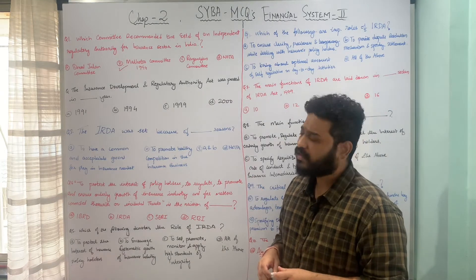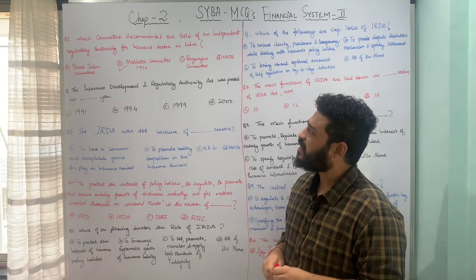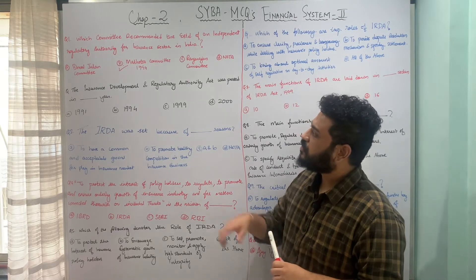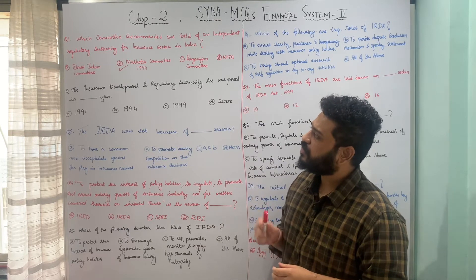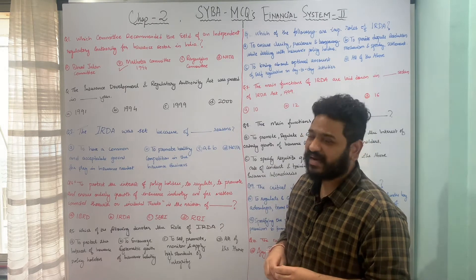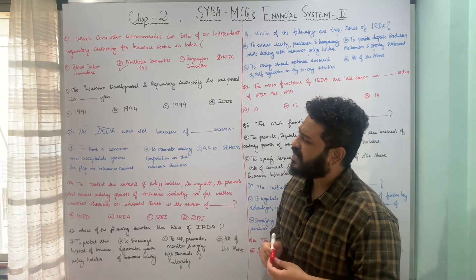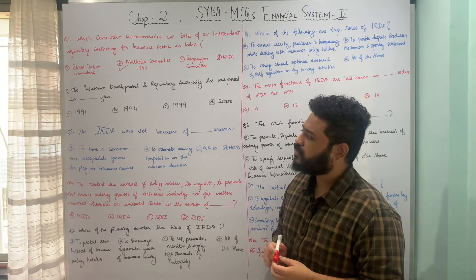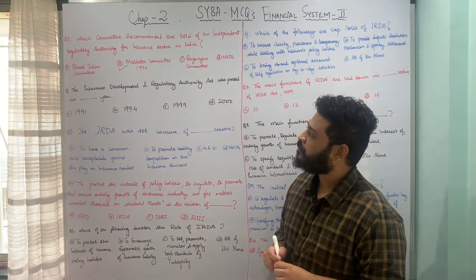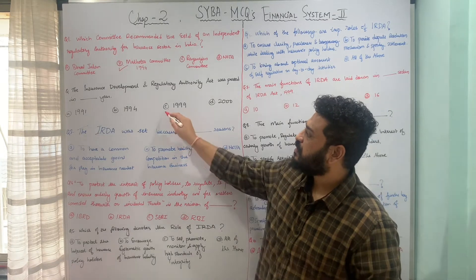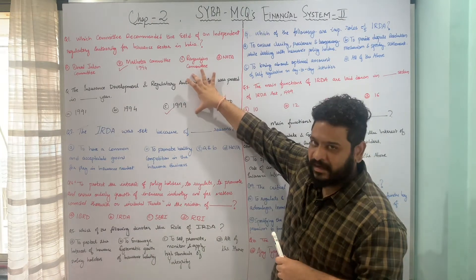The next question is: the Insurance Development and Regulatory Authority Act was passed in the year dash. The options are 1991, 1994, 1999, and 2000. The correct answer is 1999 — the Act was passed in the year 1999.